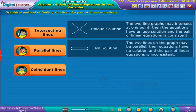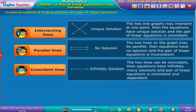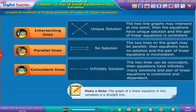The two lines on the graph may be parallel. Then the equations have no solution and the pair of linear equations is inconsistent. Make a note: the graph of a linear equation in two variables is a straight line.